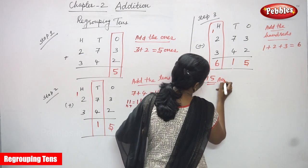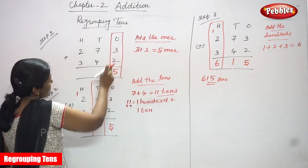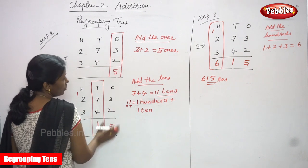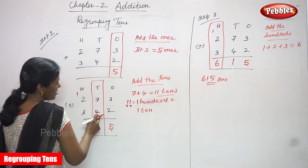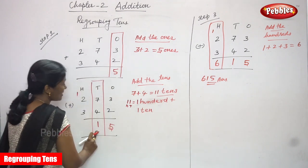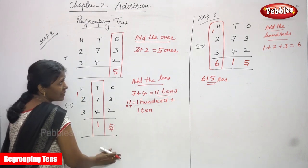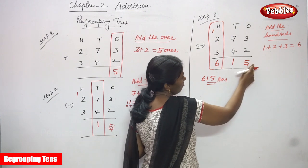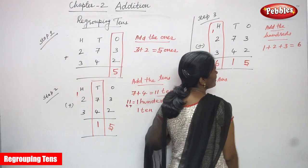So this is regrouping tens. The total answer is 615. To summarize: for the ones place, three plus two equals five. For the tens place, seven plus four equals eleven tens — so one is written in the tens place and the carryover goes to the hundreds place. Then for the hundreds place, one plus two plus three equals six.